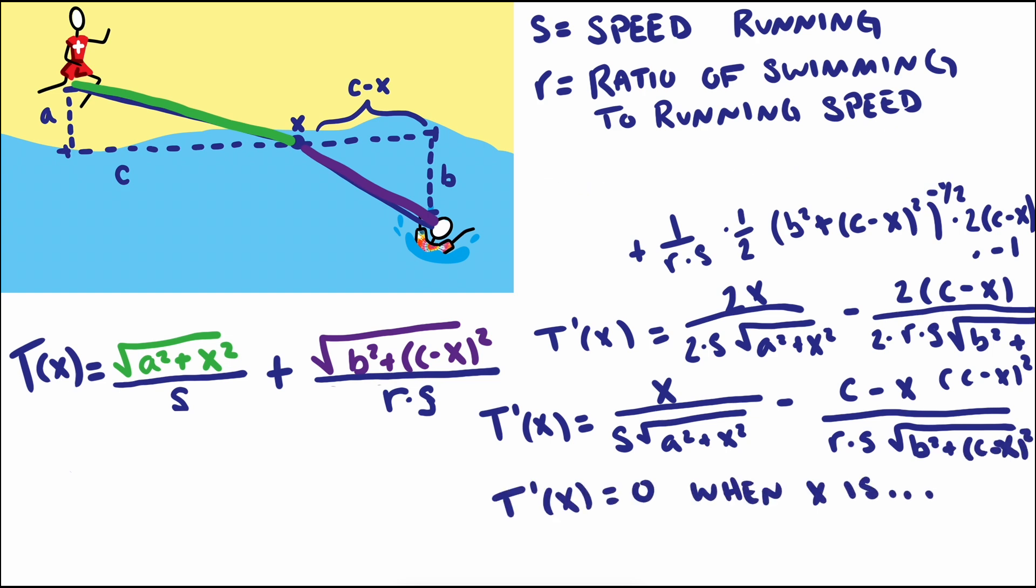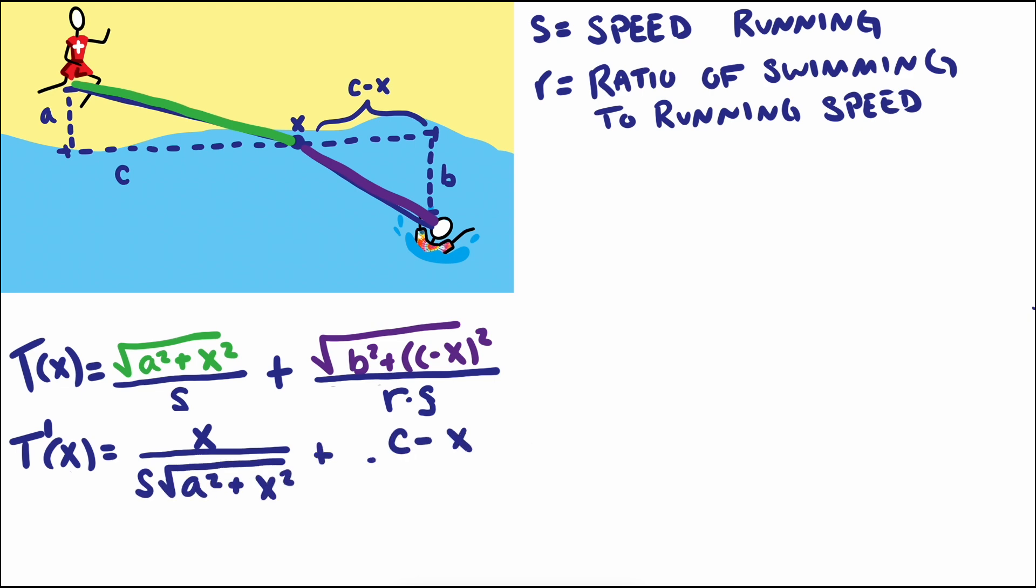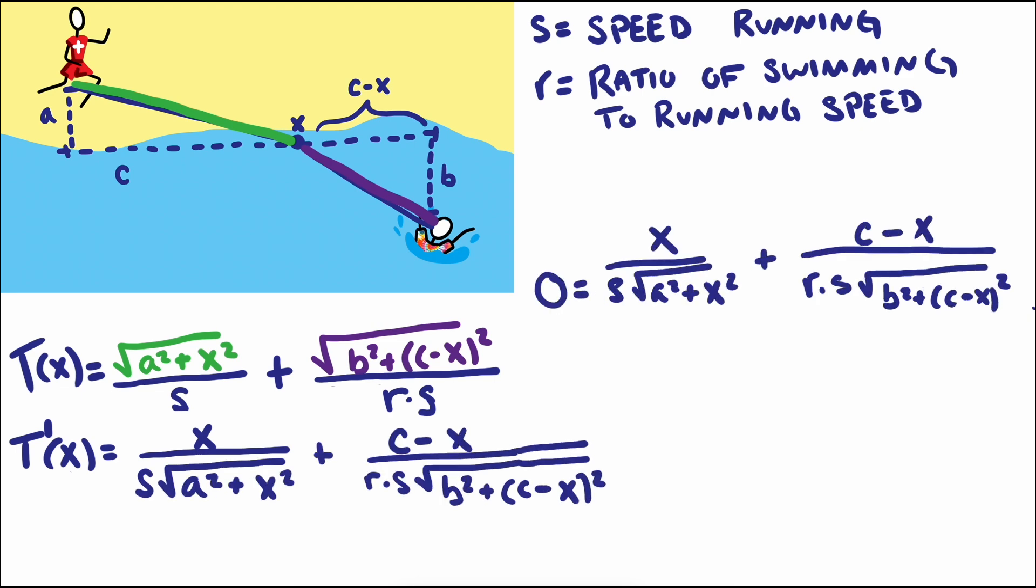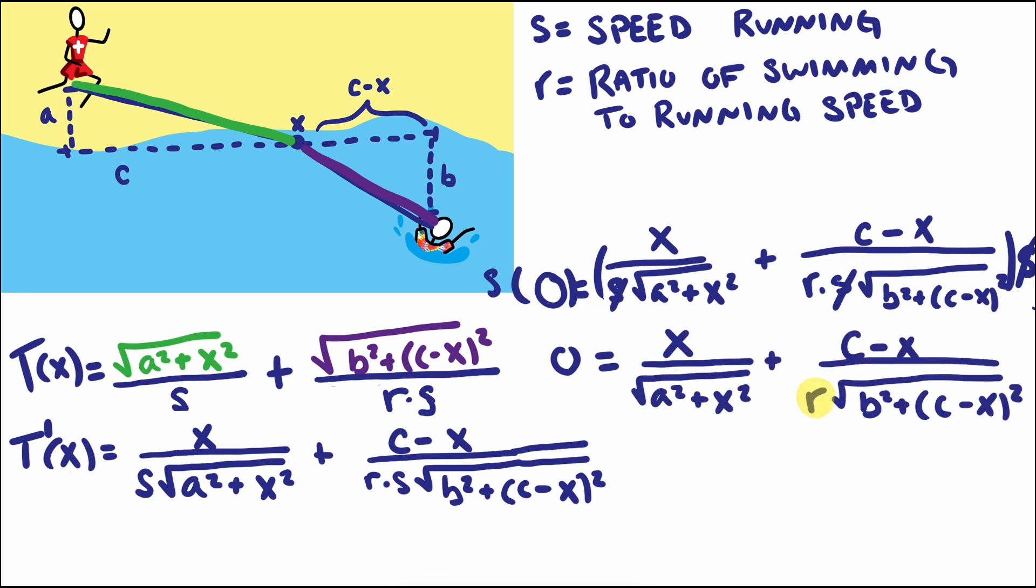One thing to notice about the solution is that it doesn't depend on the actual speeds. Our variable s can be factored out of the equation entirely, meaning that it has no effect on the solution. But the ratio of the speeds, r, still does.